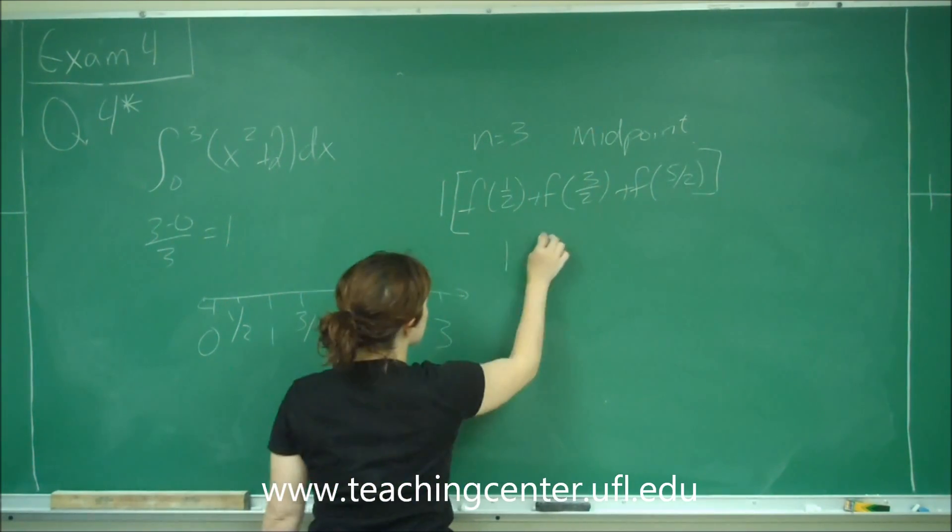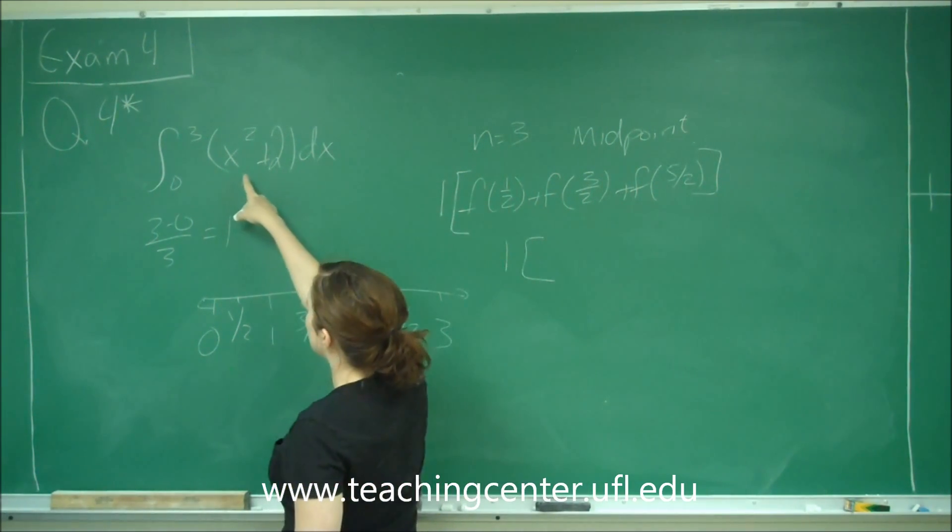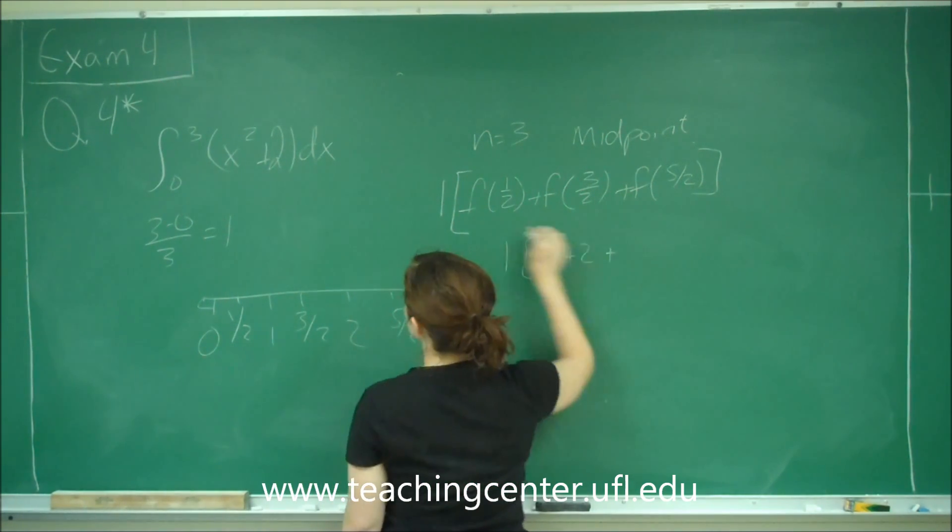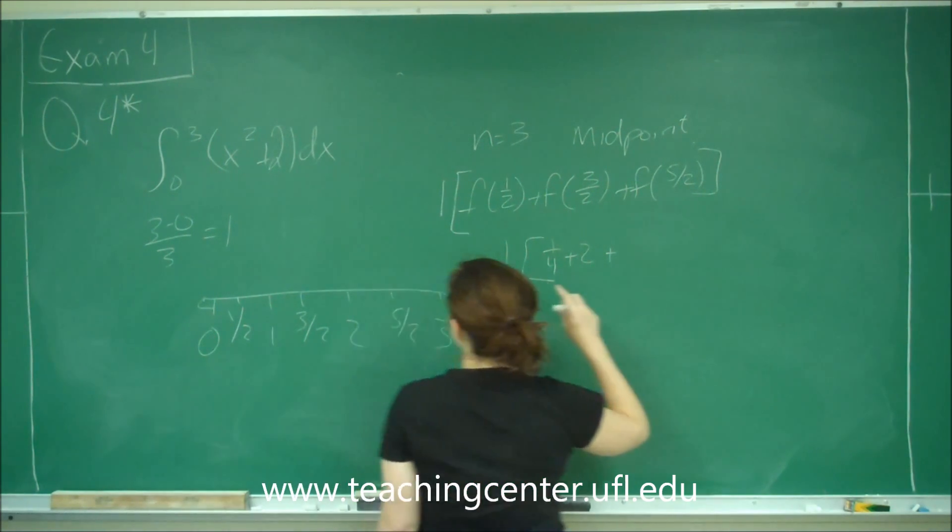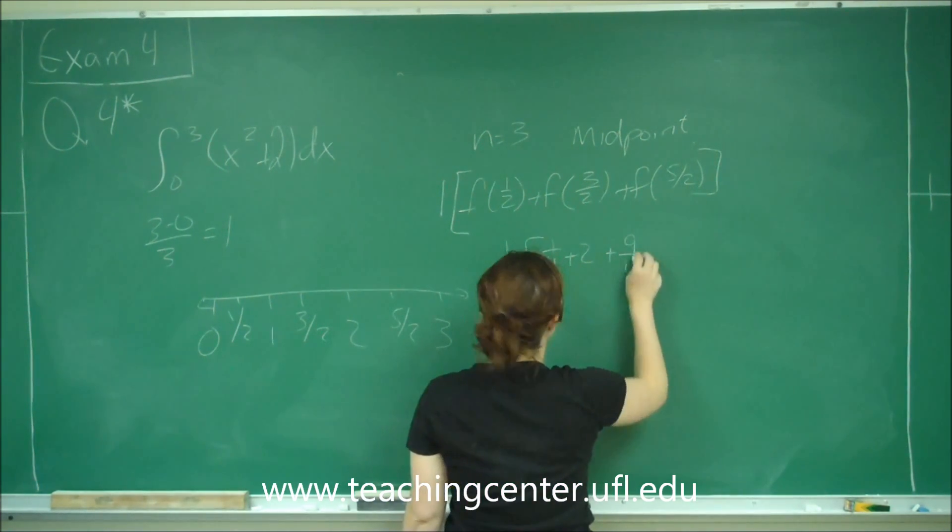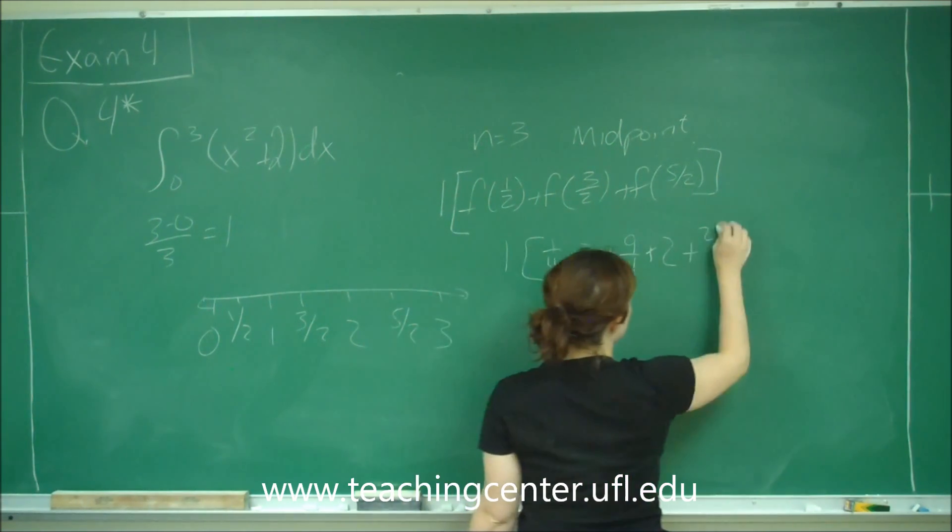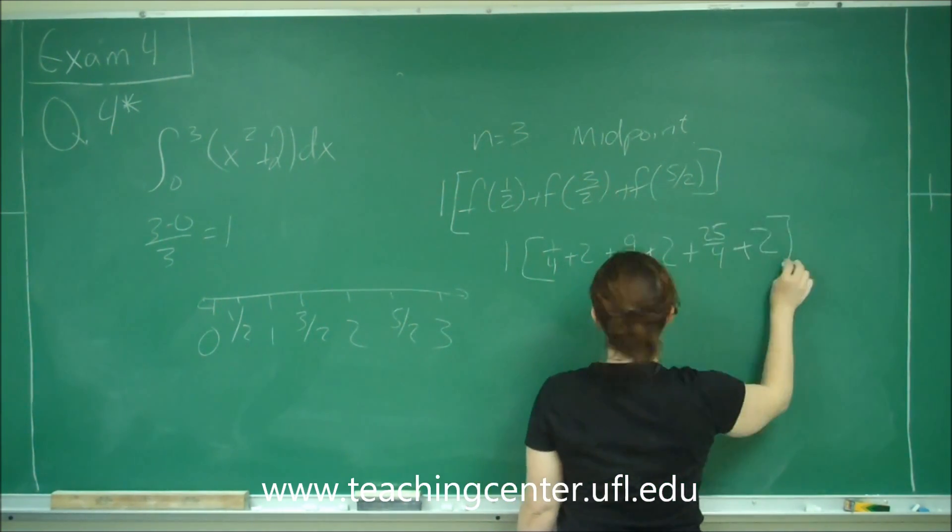So we get one times f of one half: one half squared is one fourth, so that's one fourth plus two, plus three halves squared is nine fourths plus two, plus five halves squared is twenty-five fourths plus two.